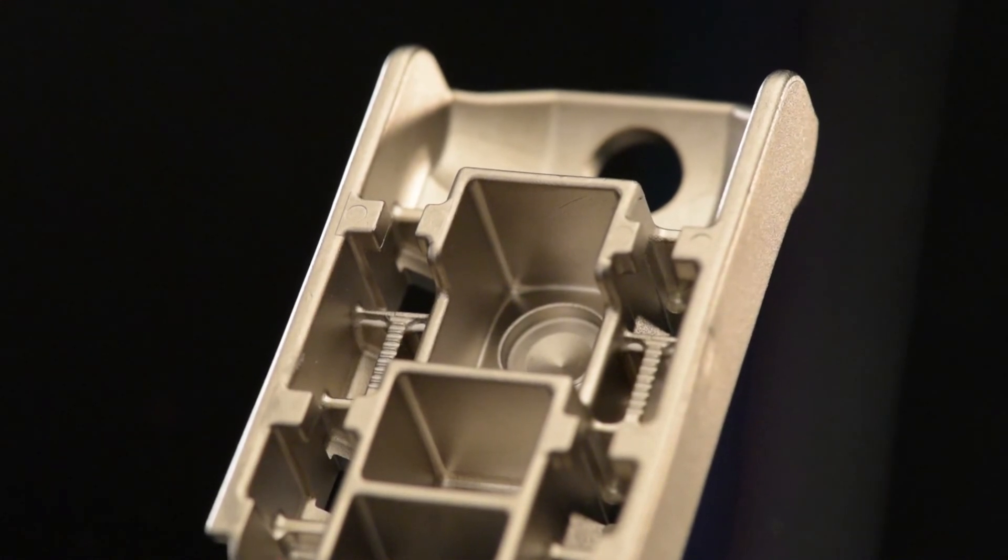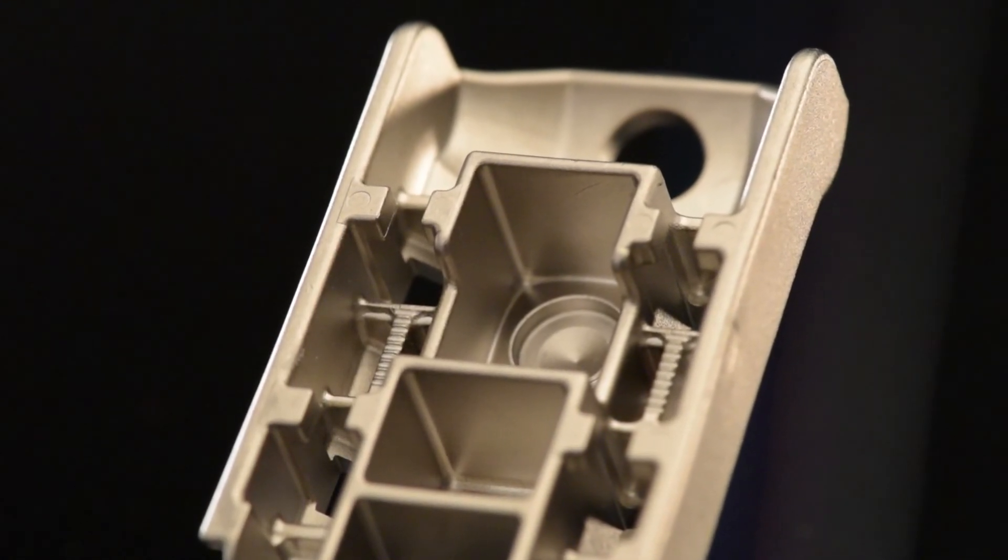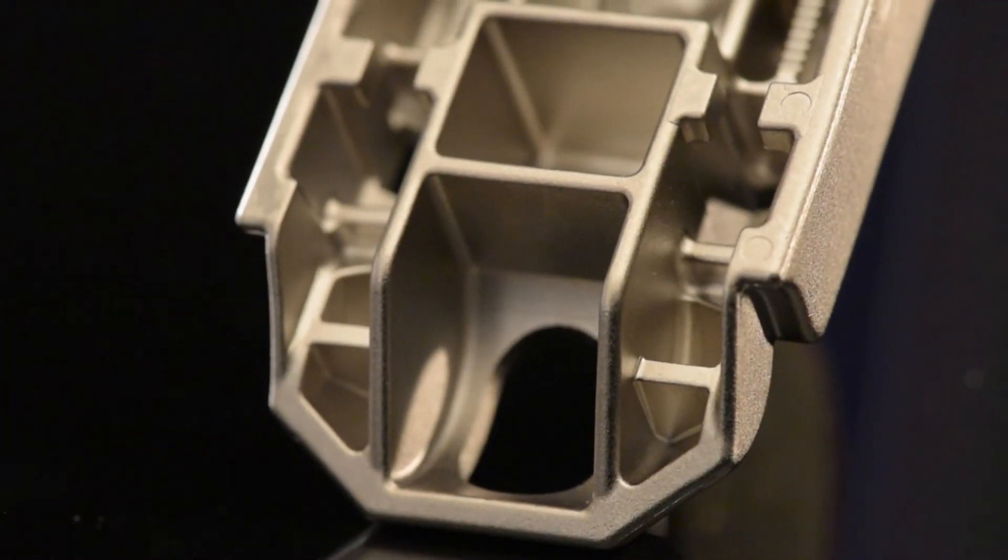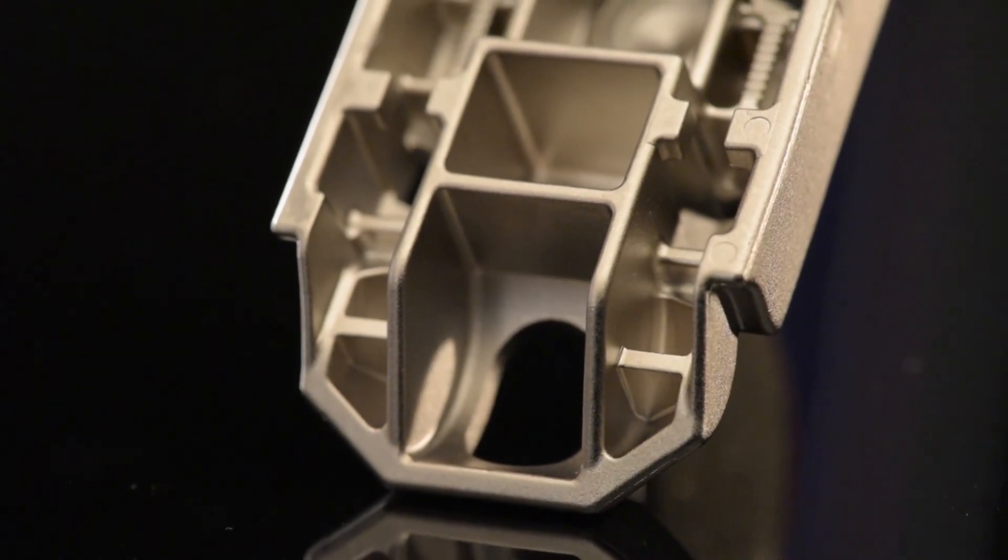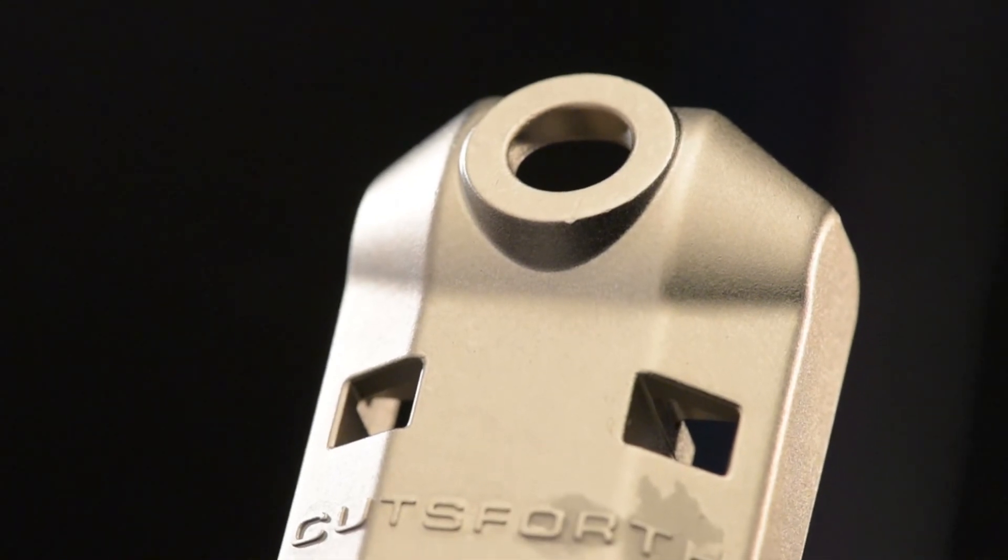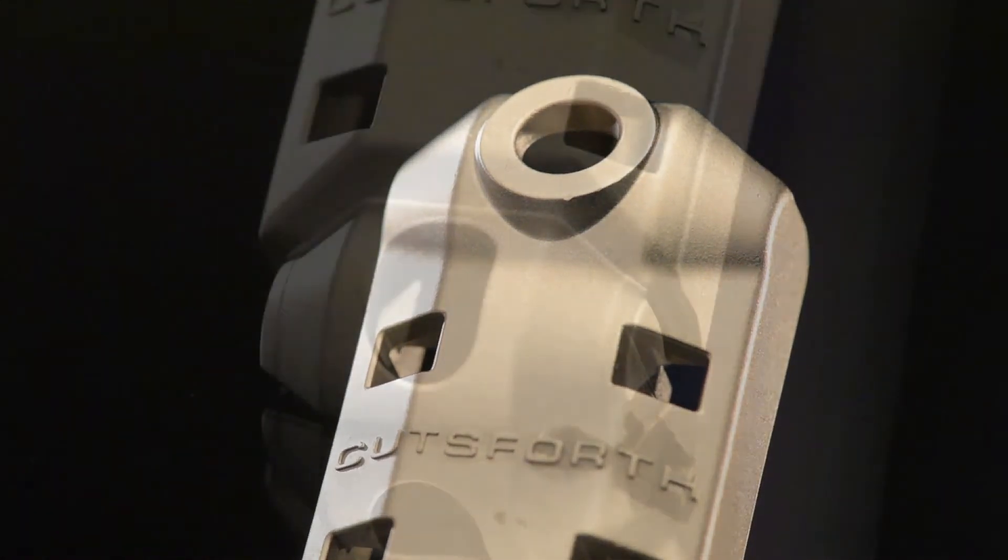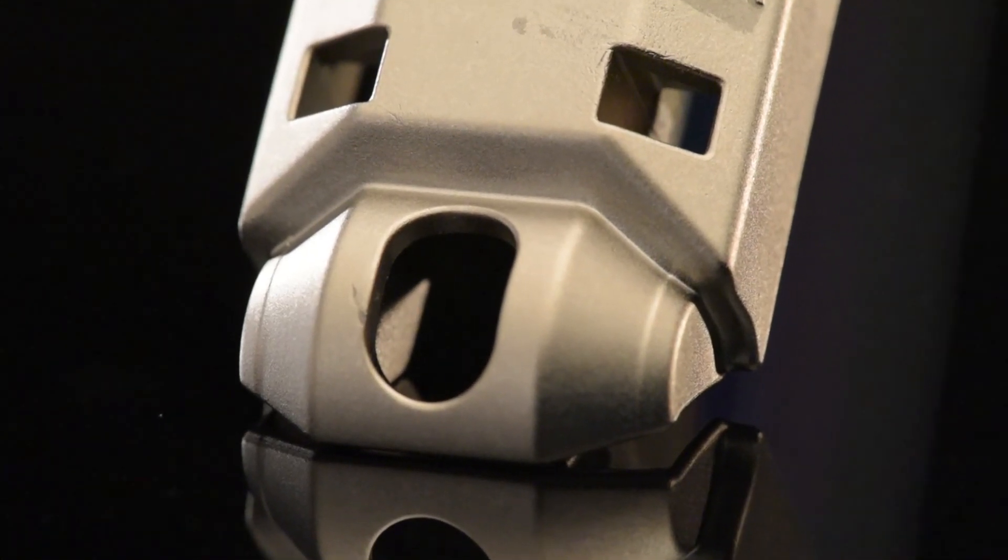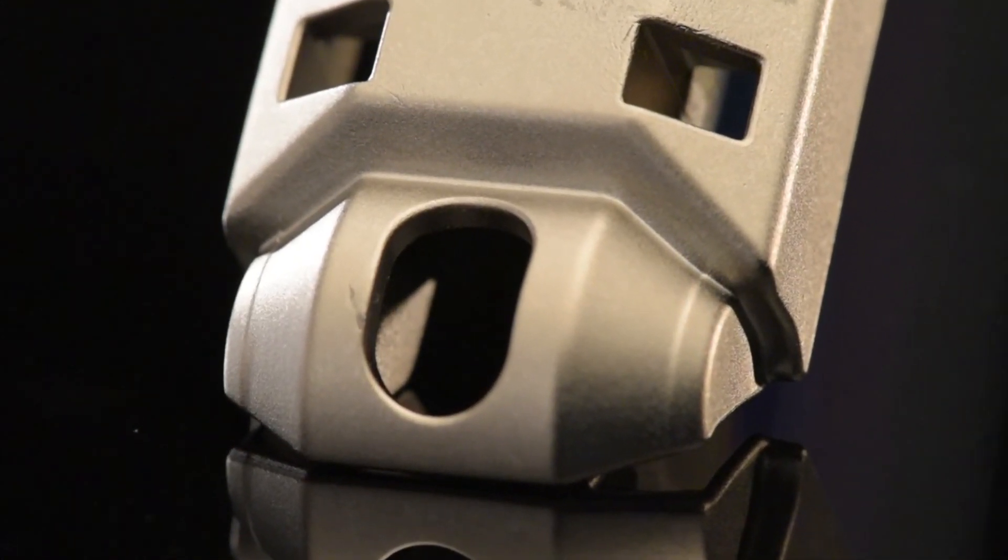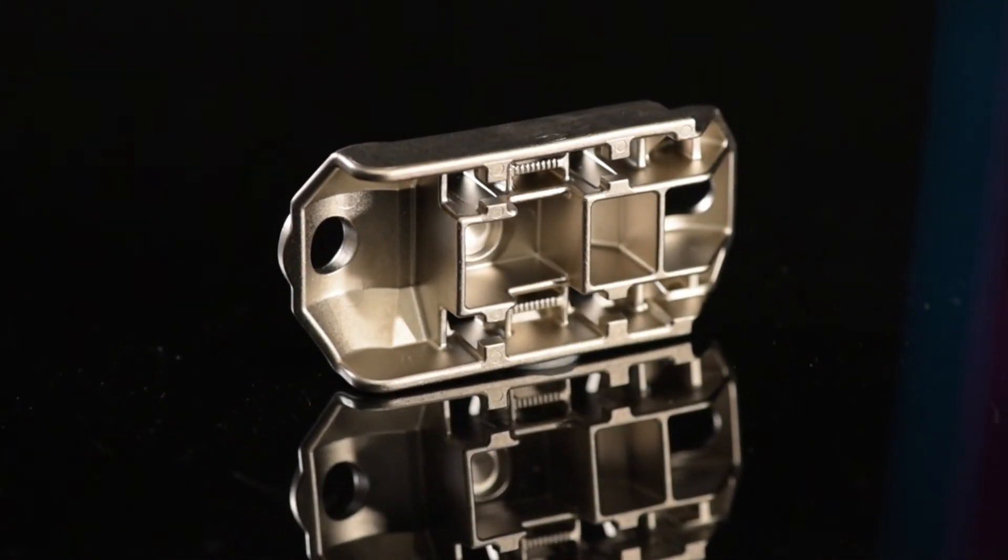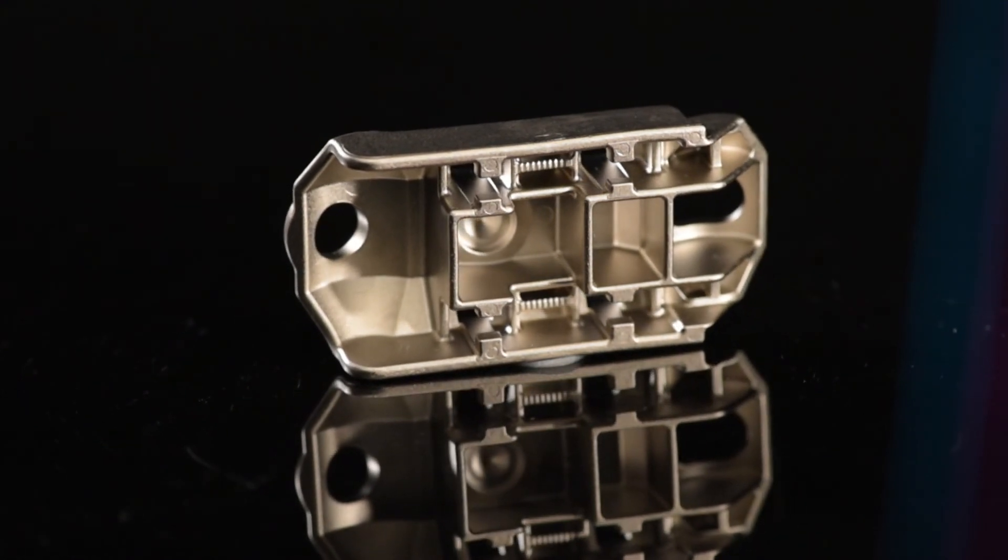Although the part design has many undercuts due to the nature of the sliding track features, its design still allows for a two-plate mold without any slides. By controlling features such as gate location, fill time, hold pressure, and barrel temperature, the MIM process was optimized to produce near final net shape components with great aesthetics. There is only one post-sinter cold working coining operation performed to bring the final guide section features within the stated ±0.005 inch tolerance and meet the functional requirements of the part.